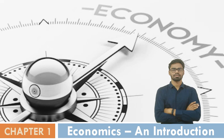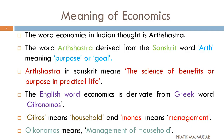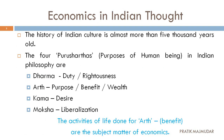Before going to the third part, let's revise what we have studied in the first and second part. In the first part, we studied the meaning of economics — different words and their different meanings. Take a snapshot of this so it will help you in MCQ-based questions. Then, Economics in Indian thought: there are four different Purushas — Dharma, Artha, Kama, and Moksha. The word Artha means the second Purushartha of Indian philosophy.